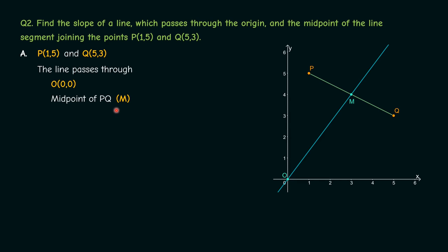Therefore the line passes through origin, which is (0, 0), and the midpoint of PQ which is denoted by M. We know that midpoint = ((x₁ + x₂)/2, (y₁ + y₂)/2). By substituting the coordinates of P and Q into this, we get M = ((1 + 5)/2, (5 + 3)/2) which can be simplified to (3, 4).